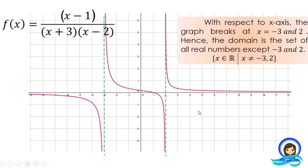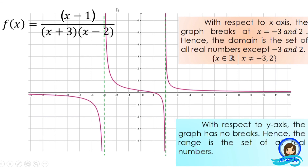With respect to the y-axis, the graph has no breaks. The graph crosses the y-axis and goes infinitely upwards and also infinitely downwards. Hence, the range is the set of all real numbers. Identifying the domain and range of a rational function given its graph is very easy — you only have to look for values where the graph tends to break. Those values are not included in the domain if it's on the x-axis, and not included in the range if it's on the y-axis.